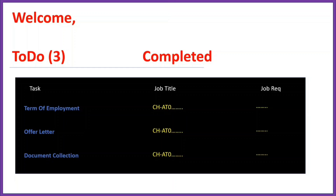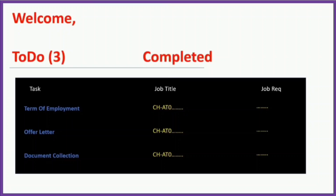The first task is your Terms of Employment. Open it and approve or agree to any agreement there. The next task is your Offer Letter — you may be asked to accept it, or it may be there just for viewing. The third section is Document Collection, where you will be asked to update your PAN details. Complete these To Do tasks as soon as possible when you first log in to the Workday portal.